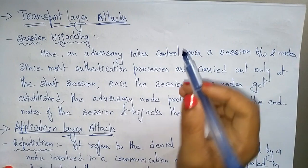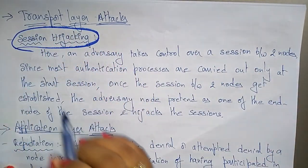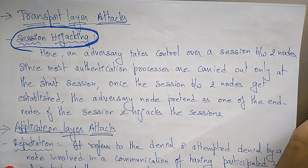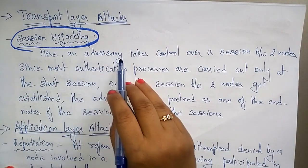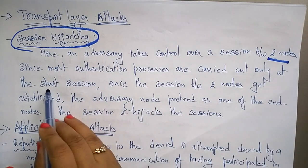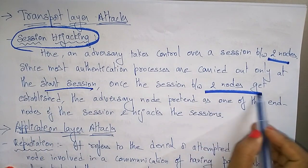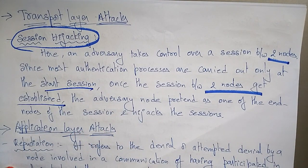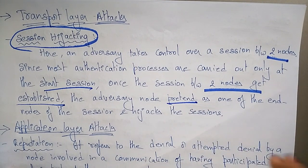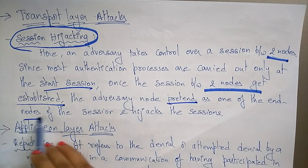In the transport layer attack, the main attack that occurs is session hijacking. The transport layer is mainly used to establish sessions and transfer data from source to destination. An adversary takes control over the session between two nodes. Since most authentication processes are carried out only at the start of a session, once a session is established, the adversary node pretends to be one of the end nodes and hijacks the session.